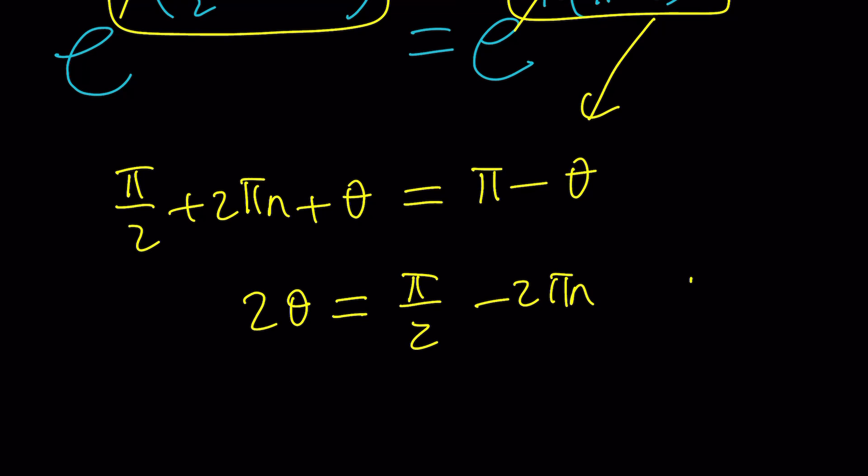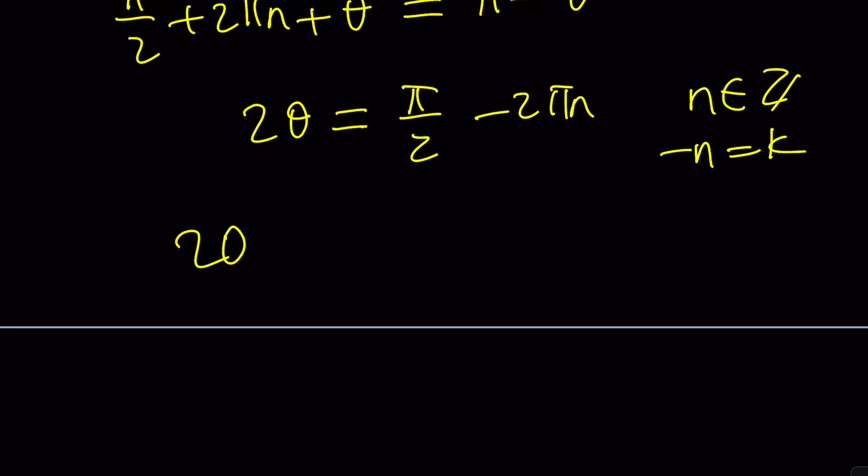Remember, n is an integer, and what about negative n? It's also an integer. Let's replace negative n with k. We get 2 theta equals pi over 2 plus 2 pi k.